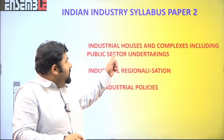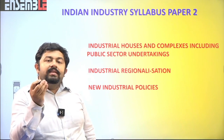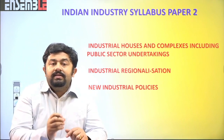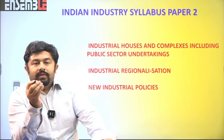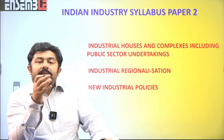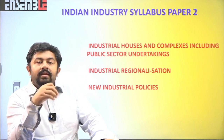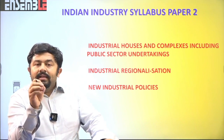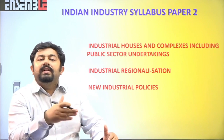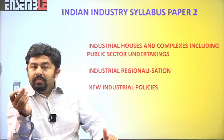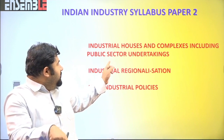To clarify the two topics: industrial complexes involve agglomeration of industries in a region, while industrial houses are business houses that form a group of industries dealing in different sectors. For example, the Tata Group deals in many sectors through its subsidiaries — right from iron and steel to automobiles to services, including IT, consultancy, production of machinery, and watches. The third component is PSUs — Public Sector Undertakings.